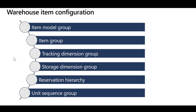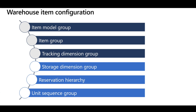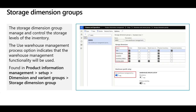When you define an item in the Warehouse Management Module, this item should be linked to Item Model Group, Item Group, Tracking Dimension Group, and Storage Dimension Group. When it comes to the Storage Dimension Group, you should configure it to use the Advanced Warehouse Management process. When enabled, you should track the items in new inventory levels like Locations, License Plates, and Inventory Status. You should also link the items to Reservation Hierarchy and Unit Sequence Groups. Let's get started with the commonly used Dimension Groups required for Standard Inventory Items and Advanced Warehouse Management Items.